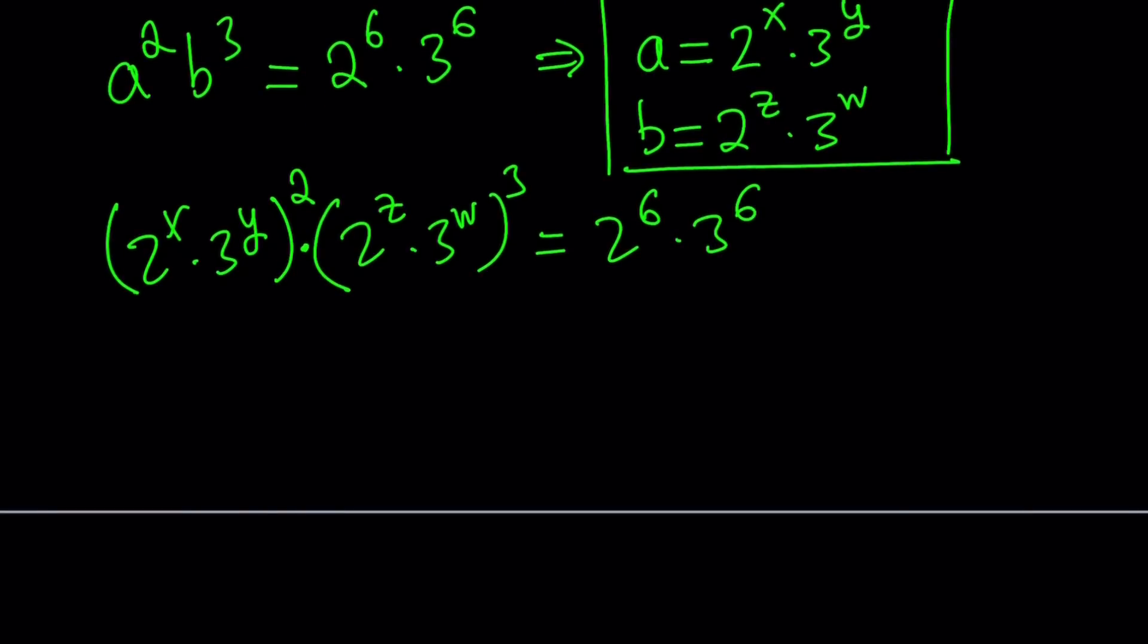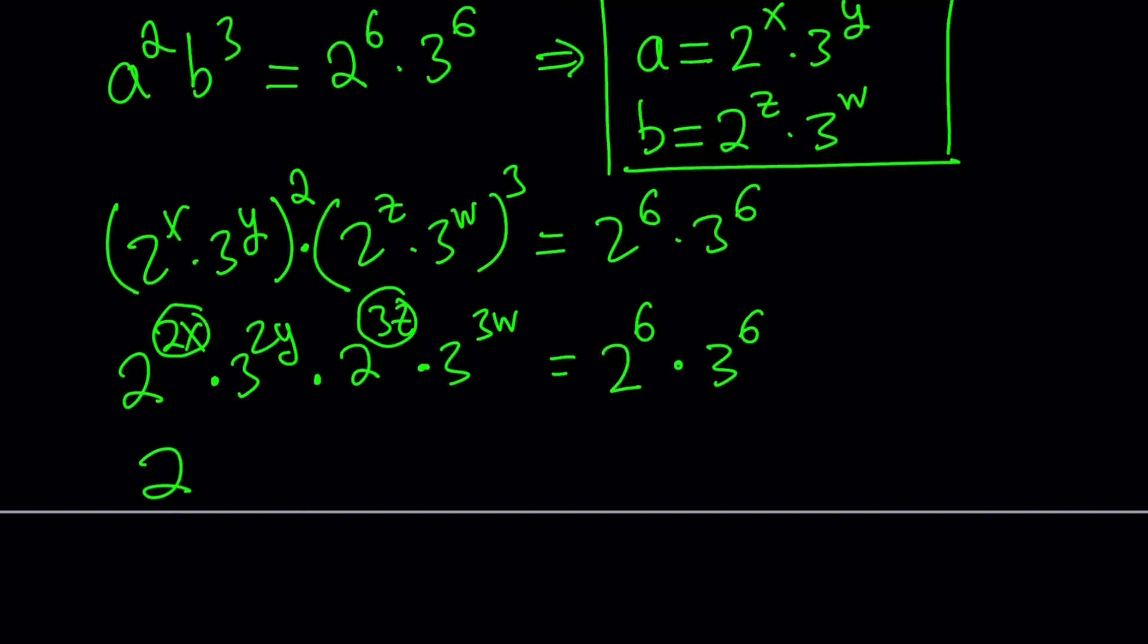If you replace a with 2 to the power x times 3 to the power y, I have to raise it to the second power. And b, write it as 2 to the z times 3 to the w, and raise it to the power 3. That should equal 2 to the power 6 times 3 to the power 6. We basically did the prime factorization on the right-hand side. Now let's expand. If you multiply x times 2, that's going to be 2 to the power 2x, 3 to the power 2y. This is going to be 2 to the power 3z and 3 to the power 3w.